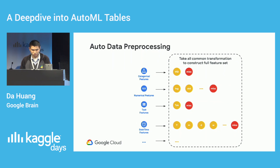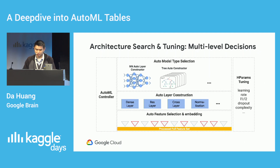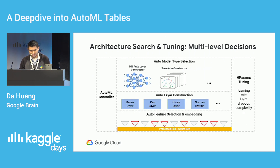This larger feature set is fed into the next phase: architecture search and tuning, where multi-level decisions are made, including automatic model type selection, layer construction, feature selection and embedding, and hyperparameter tuning.